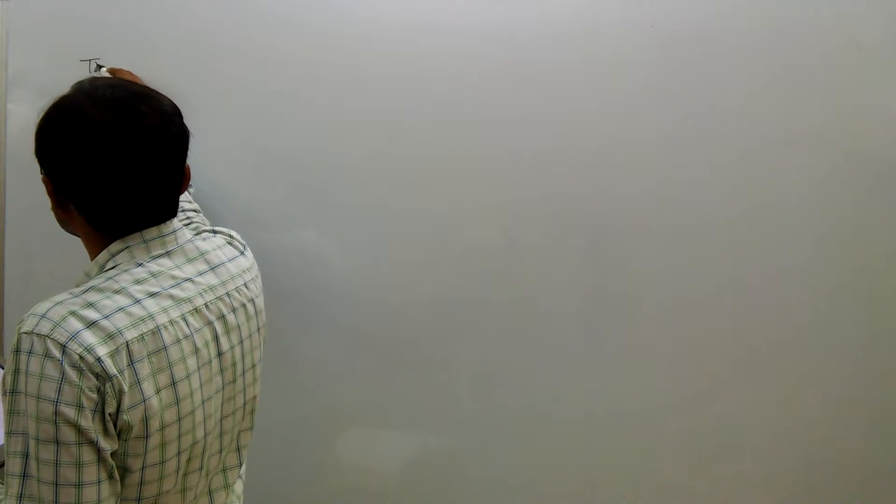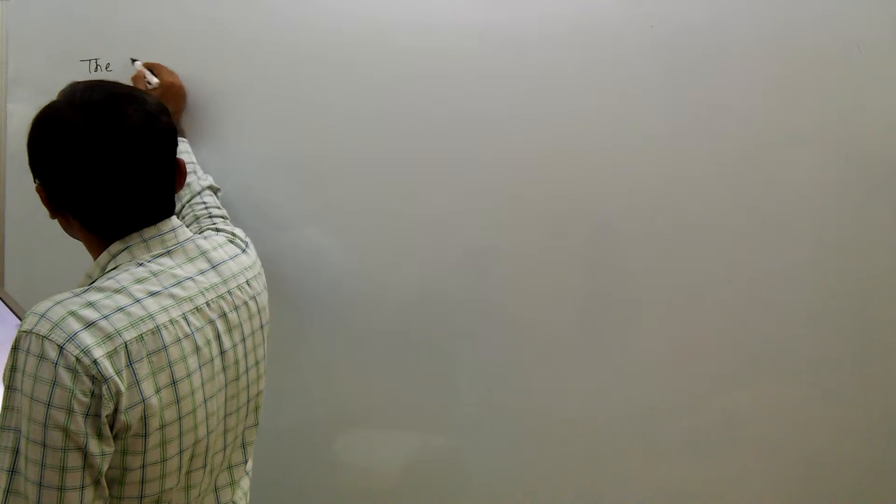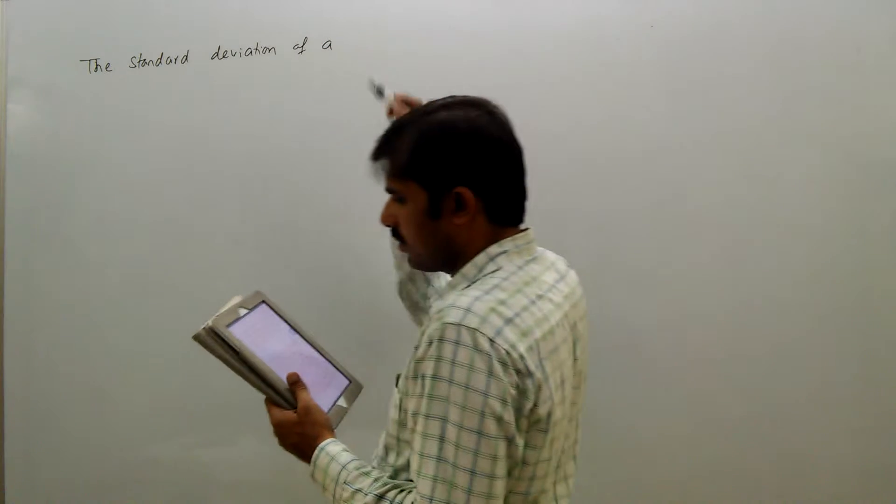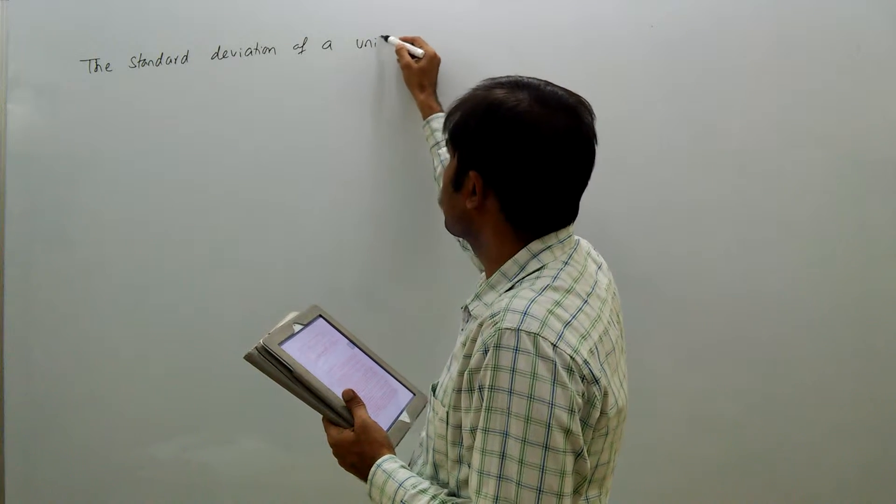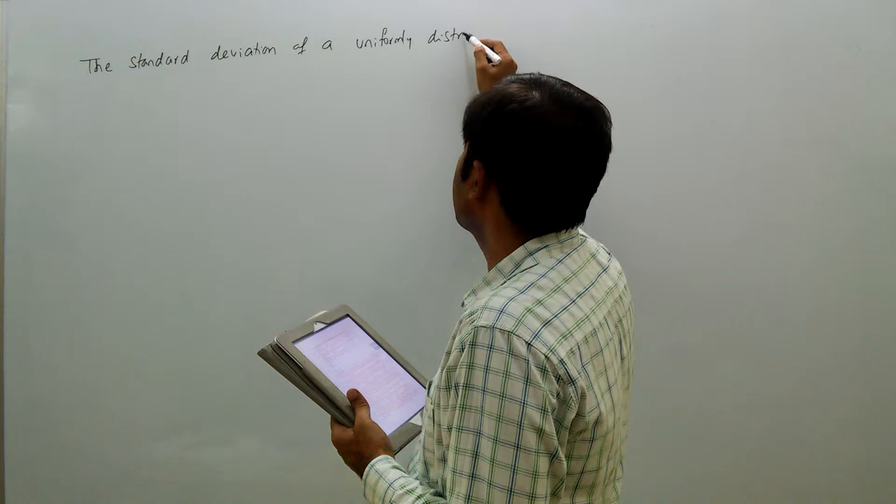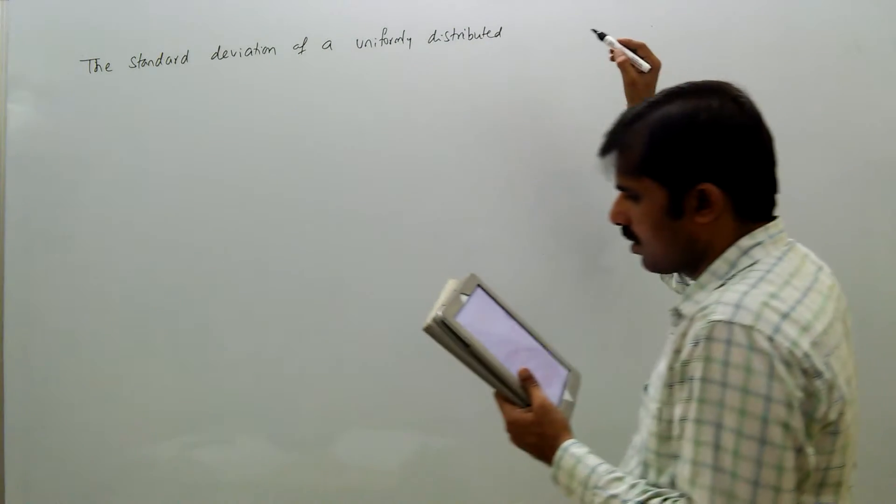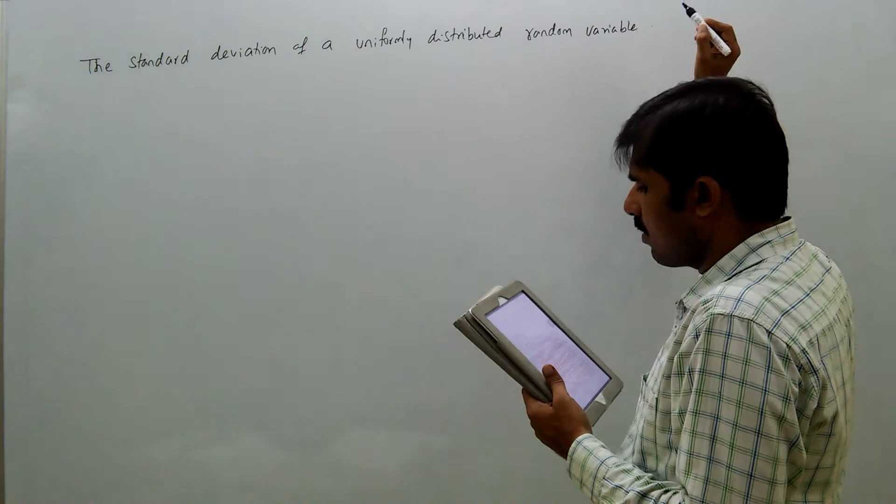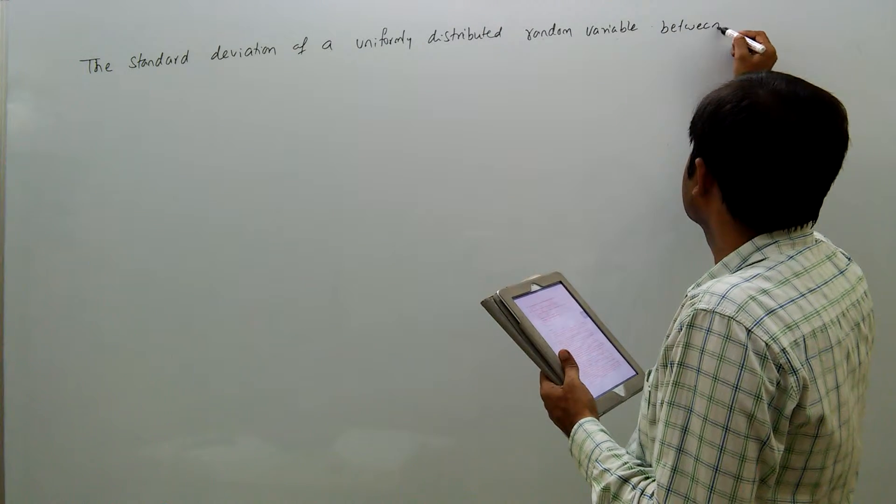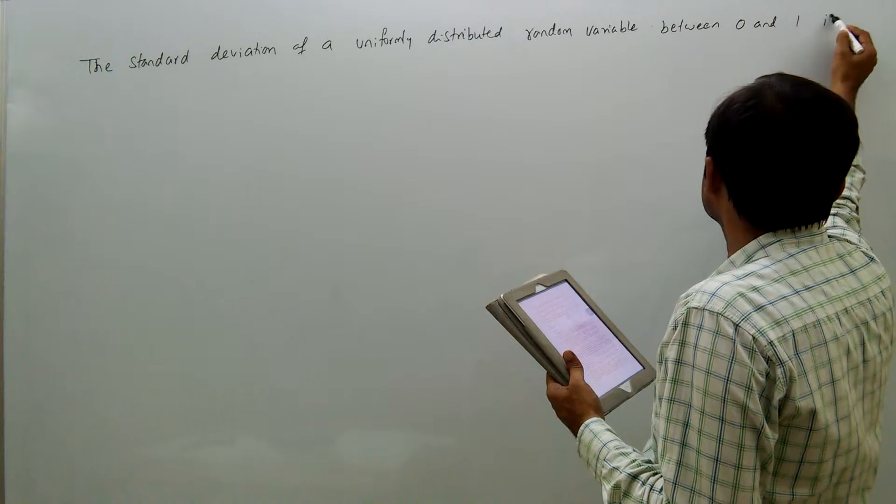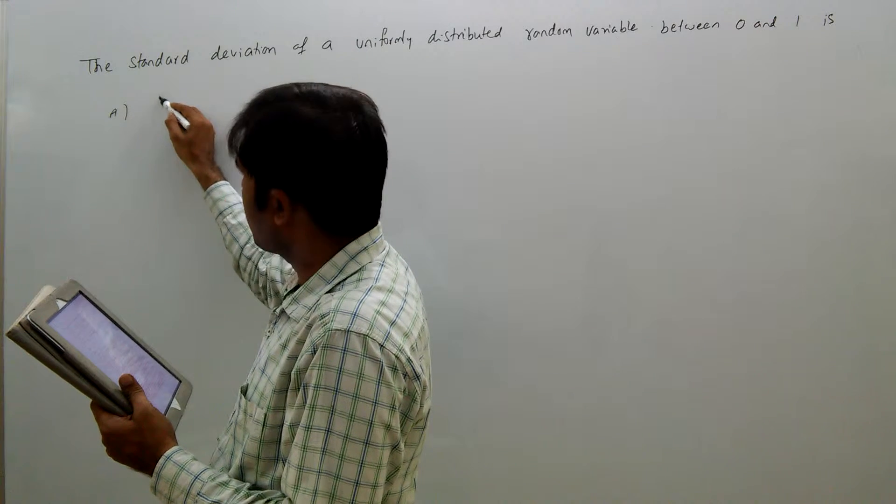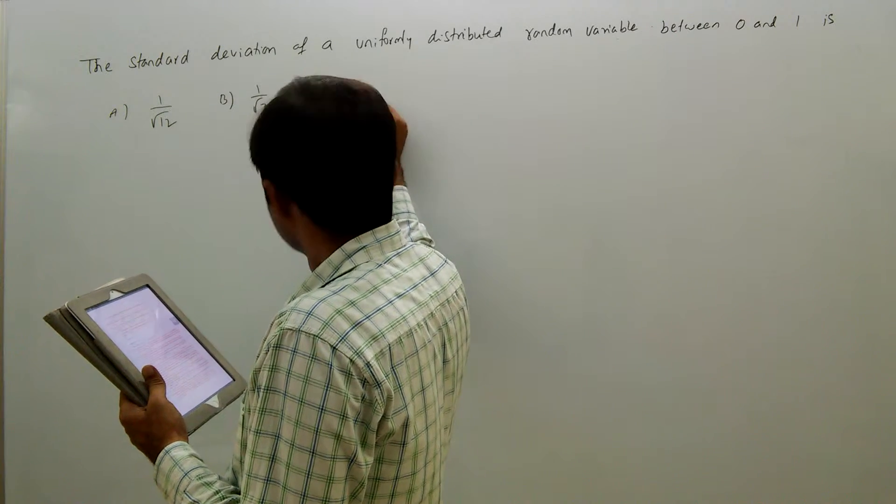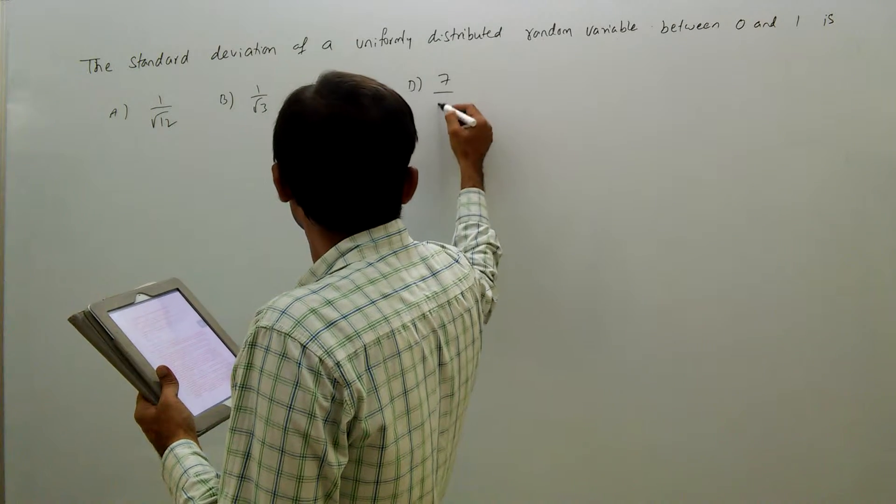The standard deviation of a uniformly distributed random variable between 0 and 1 is: option a) 1/√12, option b) 1/√3, option c) 5/√12, option d) 7/√12.